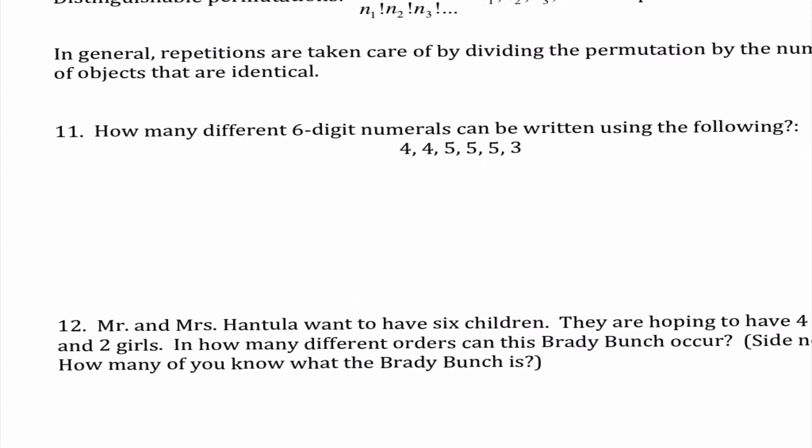So all together we have six numbers so I'm going to do 6 factorial over. Now this is when we need to pay attention. Okay I have two different fours so I'm going to write 2 factorial. I have three different fives so I'm going to write 3 factorial. And then I have one three so I can write 1 factorial. Okay so whatever however large my group is that's what I'm putting down here in the denominator. So going through this okay this would be like 4 times 5 times 5 times 6 which would give me 120 divided by 2 which would be 60. So there are 60 different ways that I could write a six digit numeral using these values.